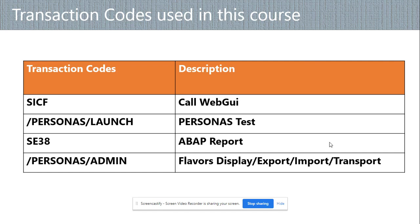We're going to talk about the transaction codes we will use in this course. Very simple — SICF, which will be used to call the WebV, which is like calling the Personas thing. From there, you can call any transaction code. Just make sure you put the transaction code you want to add or change in your favorites, so that will make your life easier.